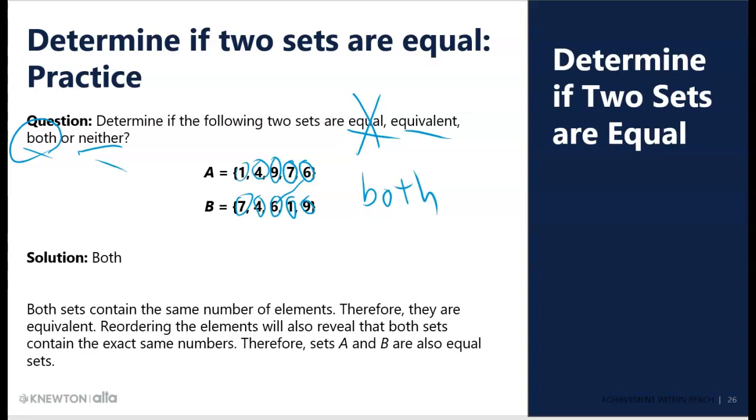So, equal would not be an incorrect statement about these, but given the phrasing of the problem, you were given four choices, which is like a multiple choice: equal, equivalent, both, or neither. Equal is not necessarily a wrong answer, but it's not the best answer, and in a multiple choice, you're looking for the best answer. The best answer is both.